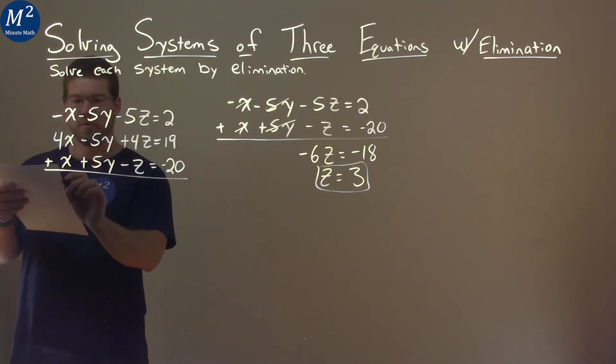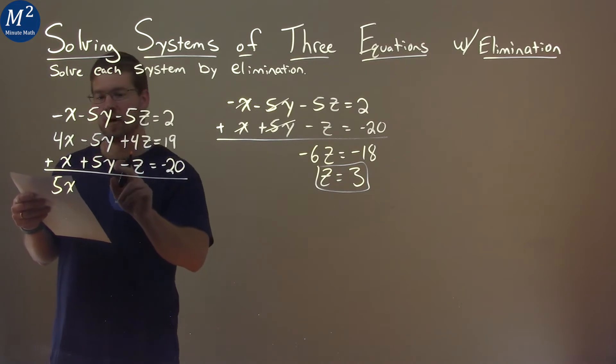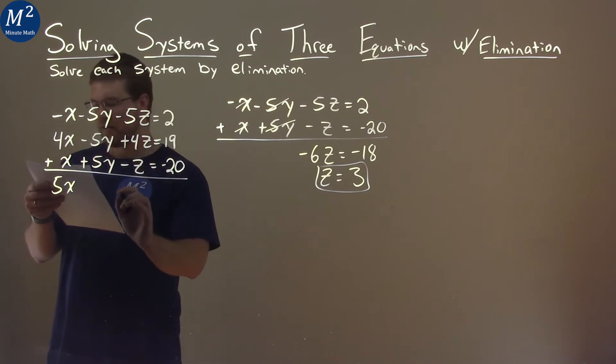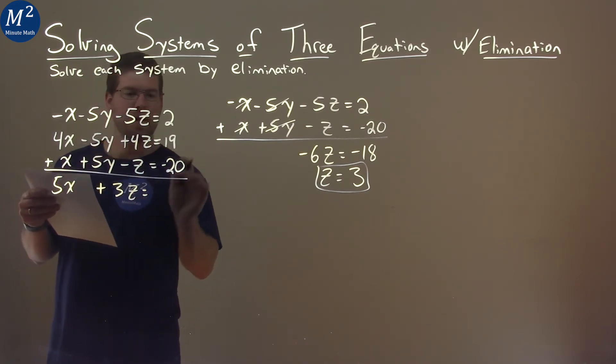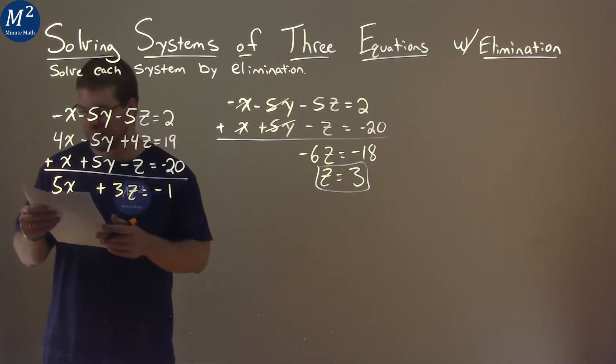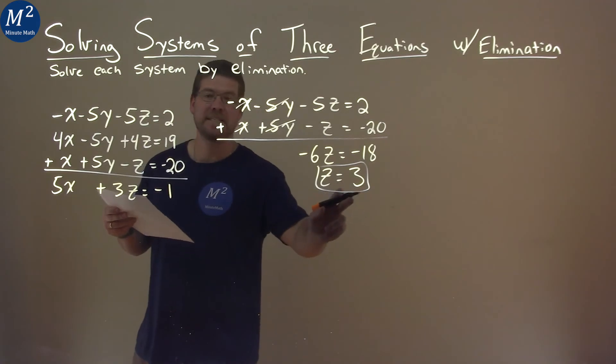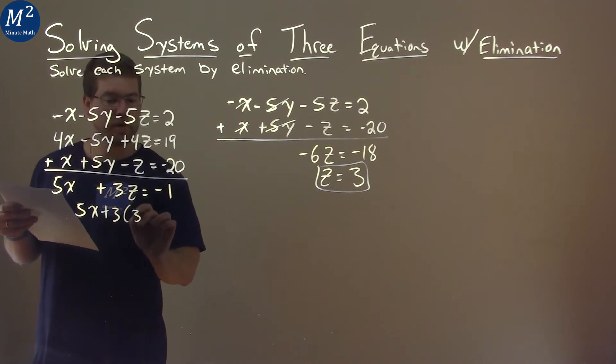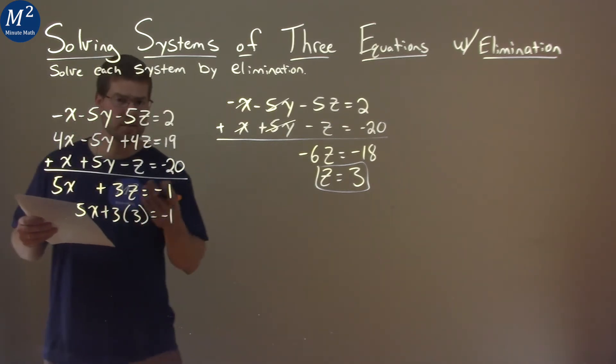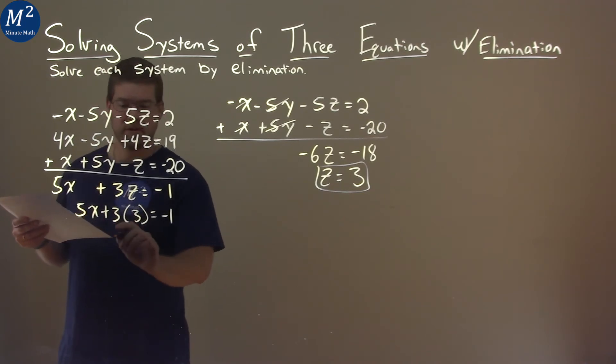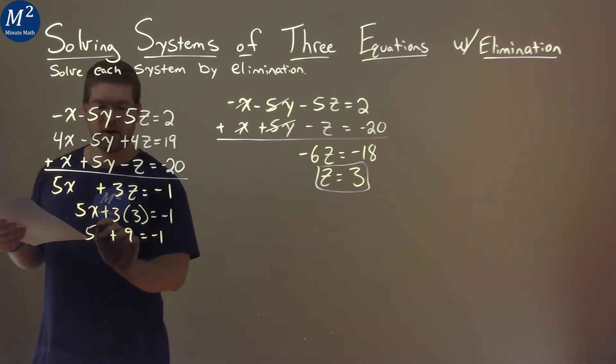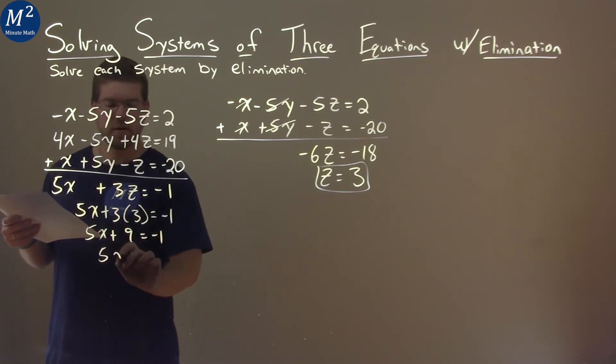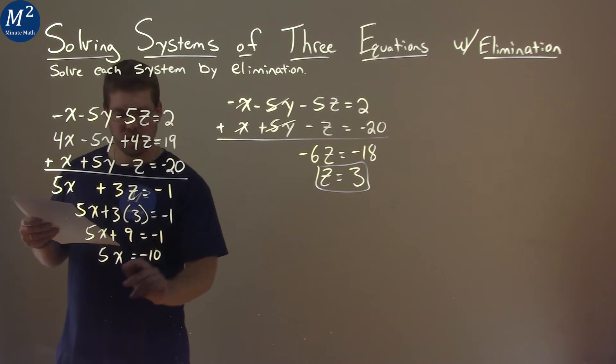4x plus x is a good old 5x. Negative 5y plus 5y is 0, that's what we're looking for. And then 4z plus negative z is 3z. And then 19 plus negative 20 is negative 1. And now, we know z is 3, so we're going to take that 3 value and put it in for z. So we have 5x plus 3 times 3 equals negative 1. So let's solve that. Now we can solve for x. 3 times 3 is 9. 5x comes down. Subtract 9 from both sides and 5x equals negative 10. Divide both sides by 5 and x equals negative 2.